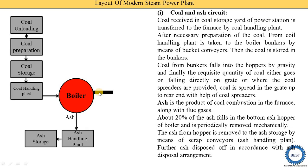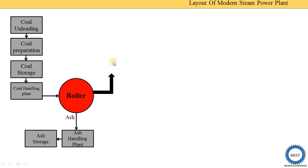The flue gases coming out are supplied for further purposes that we discuss in other circuits. Now the second circuit is the air and flue gas circuit. Its name is given based on its input and output — air is the input and flue gases are the output.